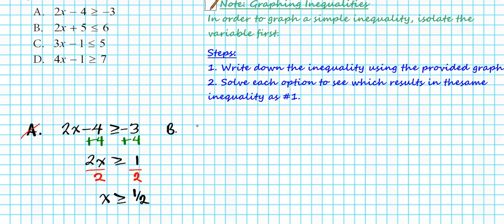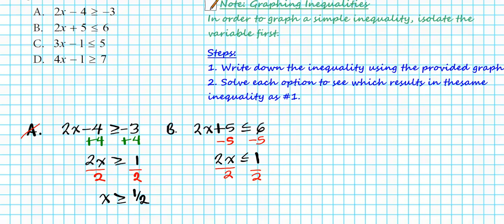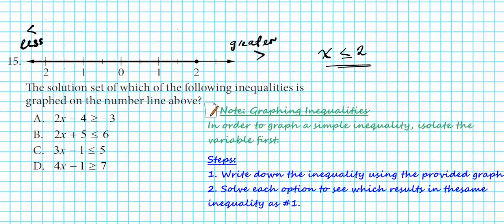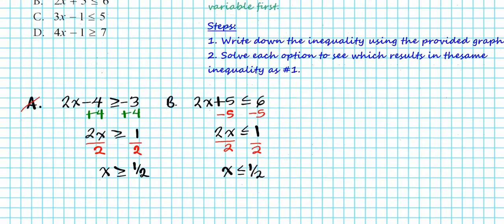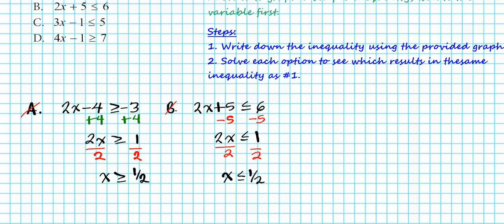For option B: 2x plus 5 less than or equal to 6. Subtract 5 from both sides: 2x less than or equal to 1. Divide both sides by 2: x less than or equal to 1 half. That's not the desired inequality either, so option B is not the answer.